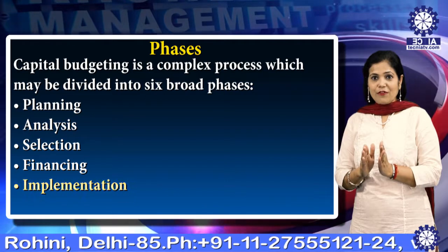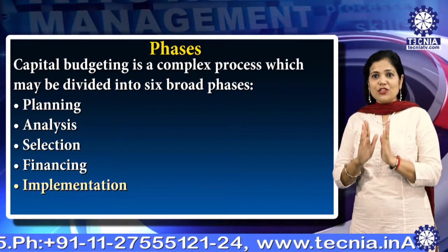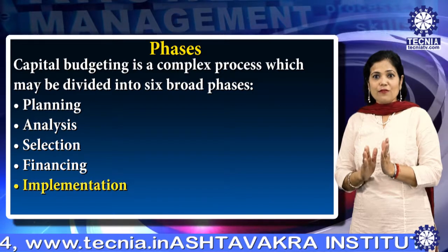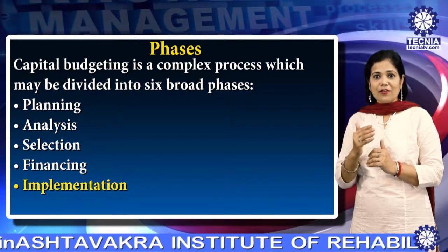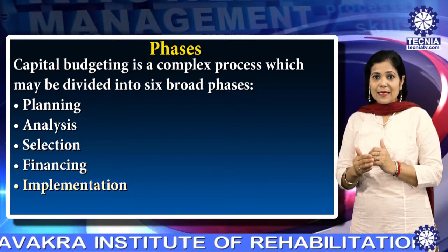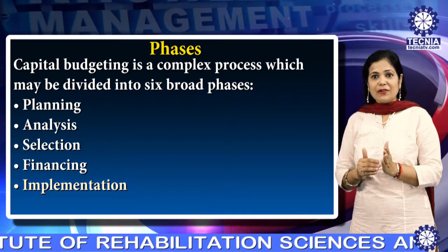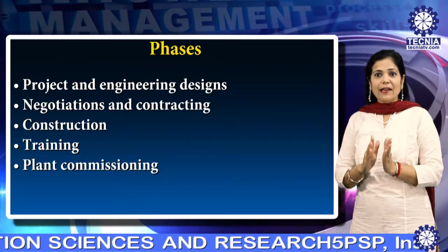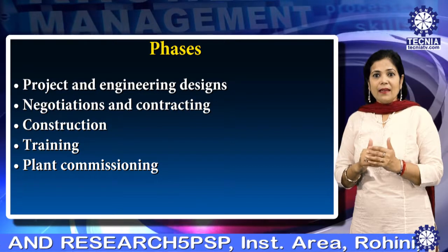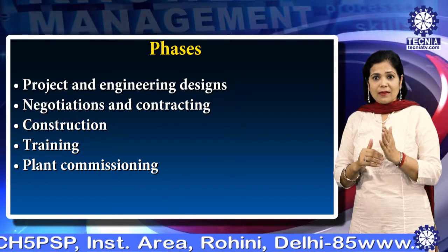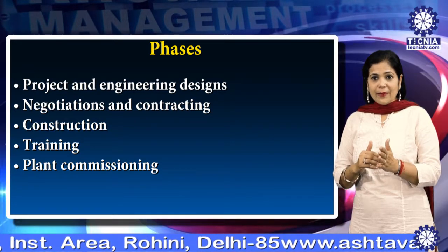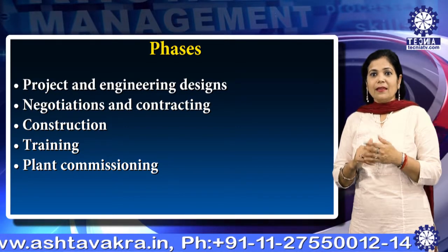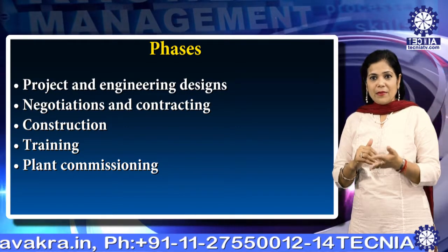Then implementation of a project. The implementation phase for an industrial project, which involves the setting up of manufacturing facilities, consists of several stages: project and engineering designs, negotiation and contracting, construction, training, and plant commissioning.